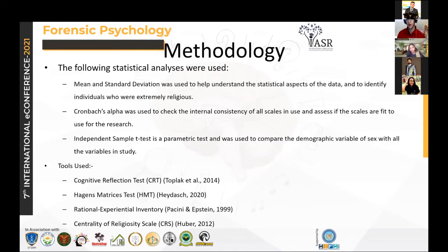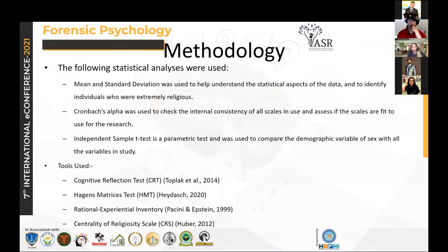The following statistical analyses were used. Mean and standard deviation were used. The methodology involved going to different websites — for example, puma.com, hindudharmaforum.com, and the True Christian subreddit on Reddit — and sending out questions to individuals devoted to their particular religion. One limitation is that we are looking at religion as a whole, not differentiating between Hindus, Muslims, or Christians. Individuals who scored two standard deviations above the mean on the Centrality of Religiosity Scale were treated as extremists. Cronbach's alpha was used to check internal consistency — all scales were acceptable, all above 0.7 — and an independent samples t-test was used to check differences between the normal and religious populations.